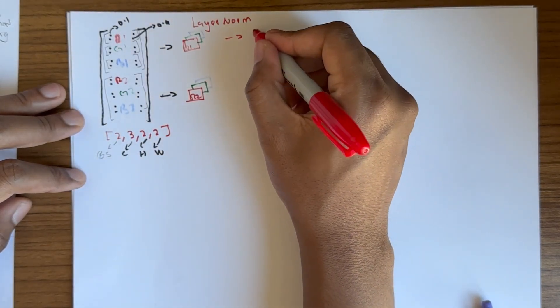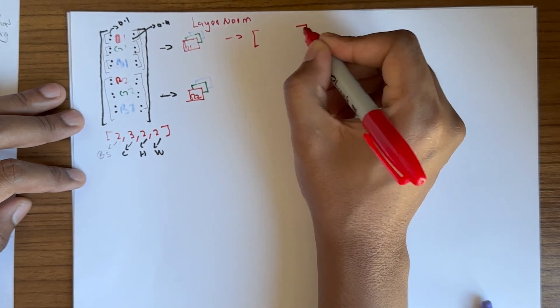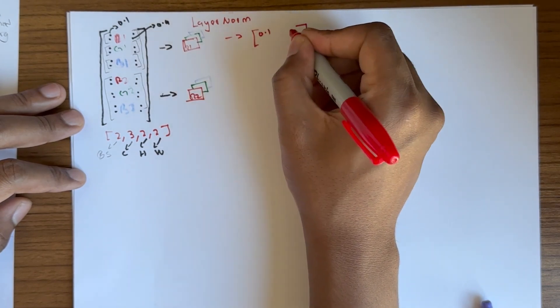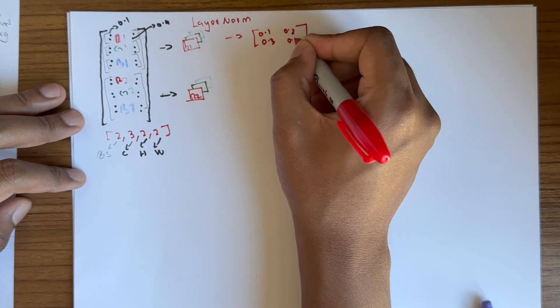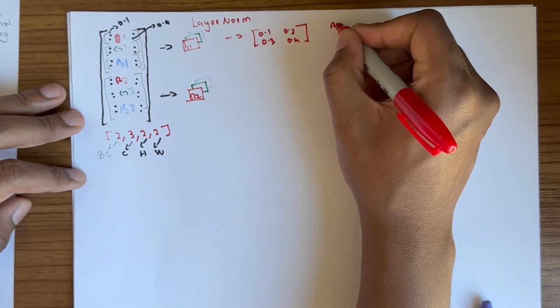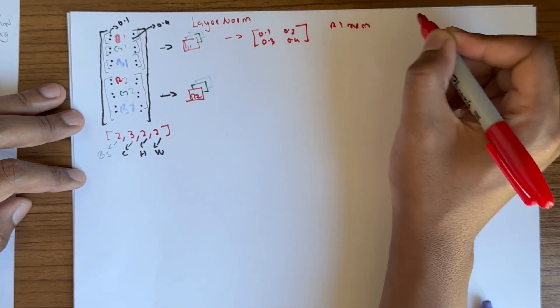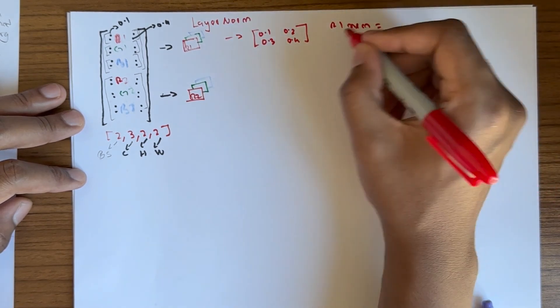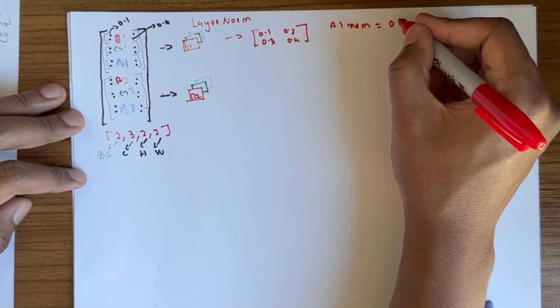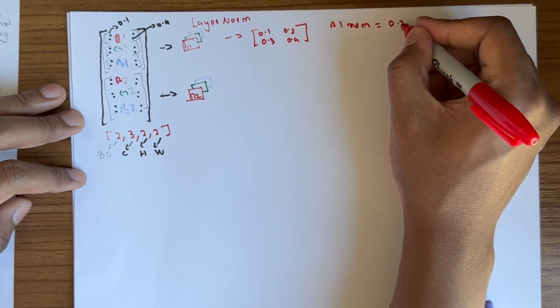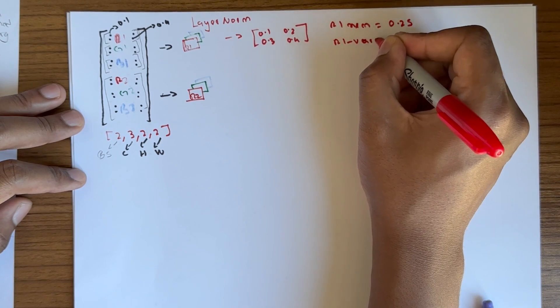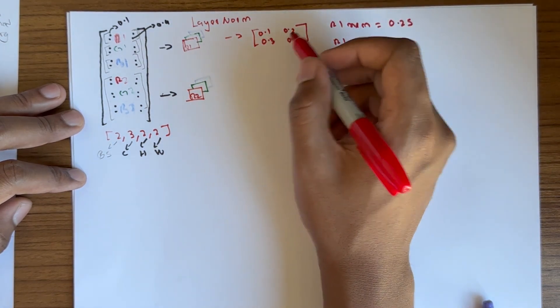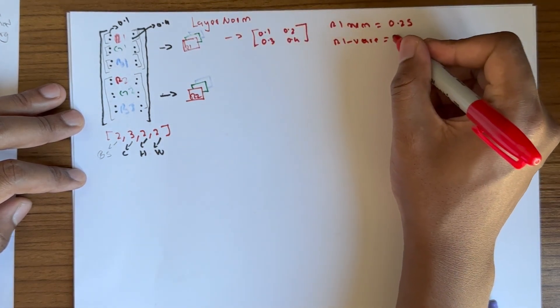Let's say R1 is 0.1, 0.2, 0.3, 0.4. R1 mean is the sum of all values divided by 4, which equals 0.25. Then we compute R1 variance, dividing by 4 because we have 4 numbers.